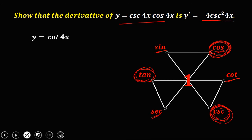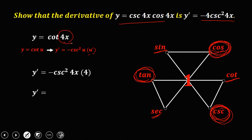Since the derivative of cotangent is negative cosecant squared u times the derivative of u, y prime is equal to negative cosecant squared 4x times the derivative of 4x, which is 4. So y prime is equal to negative 4 cosecant squared 4x.